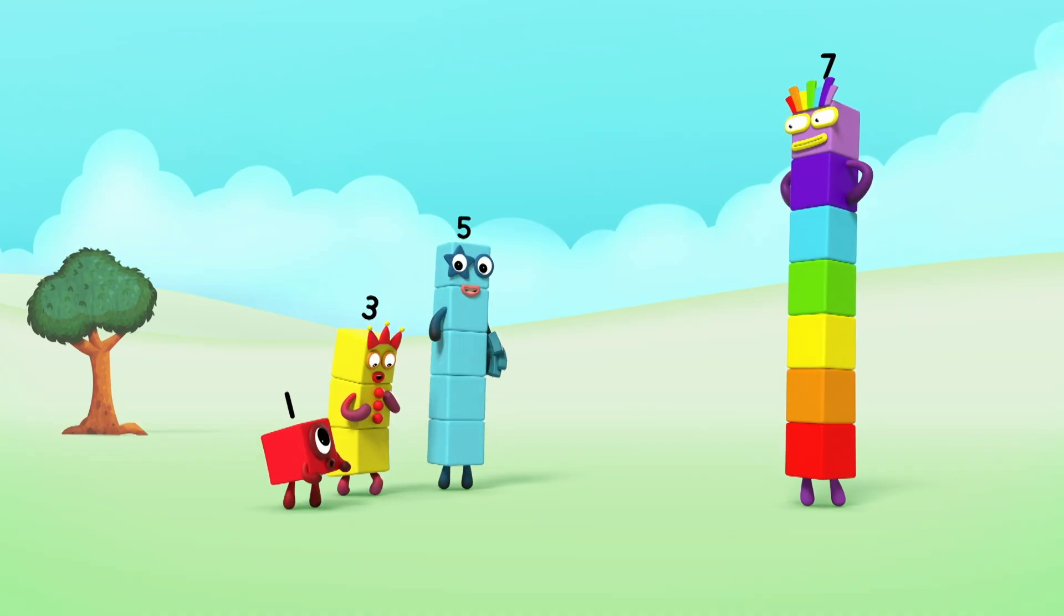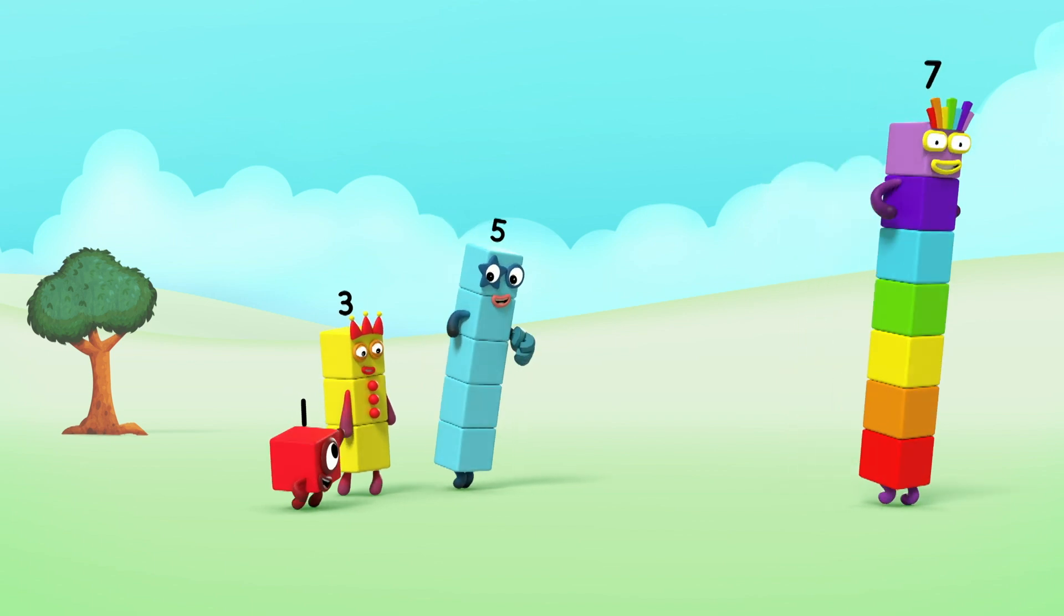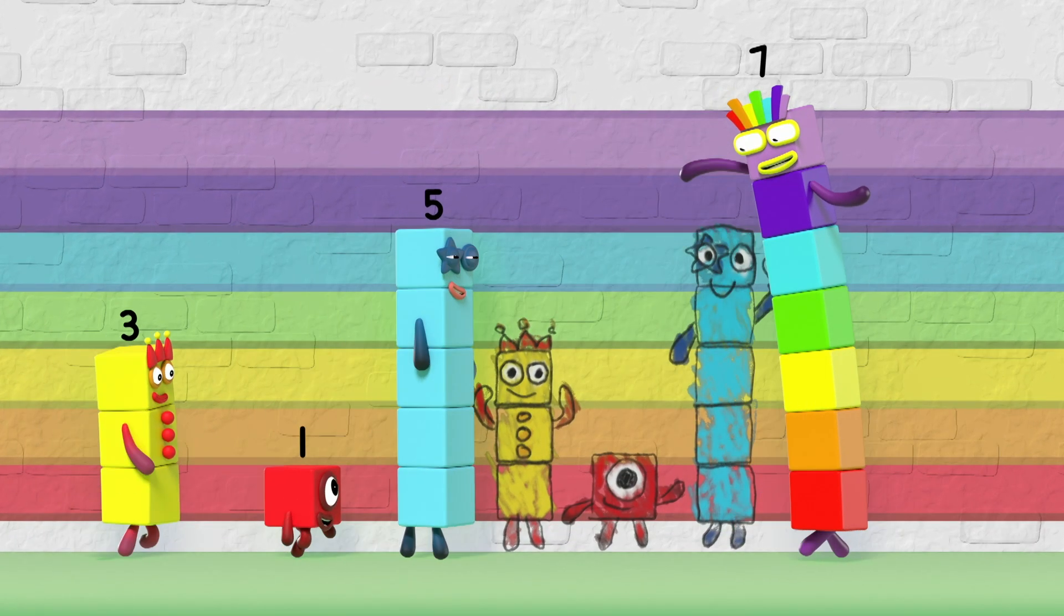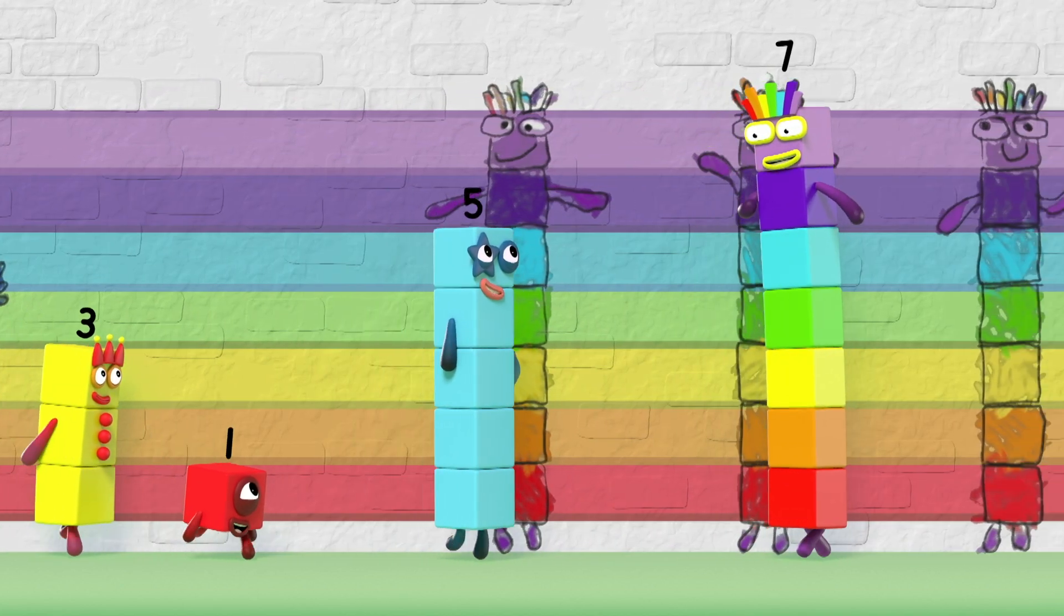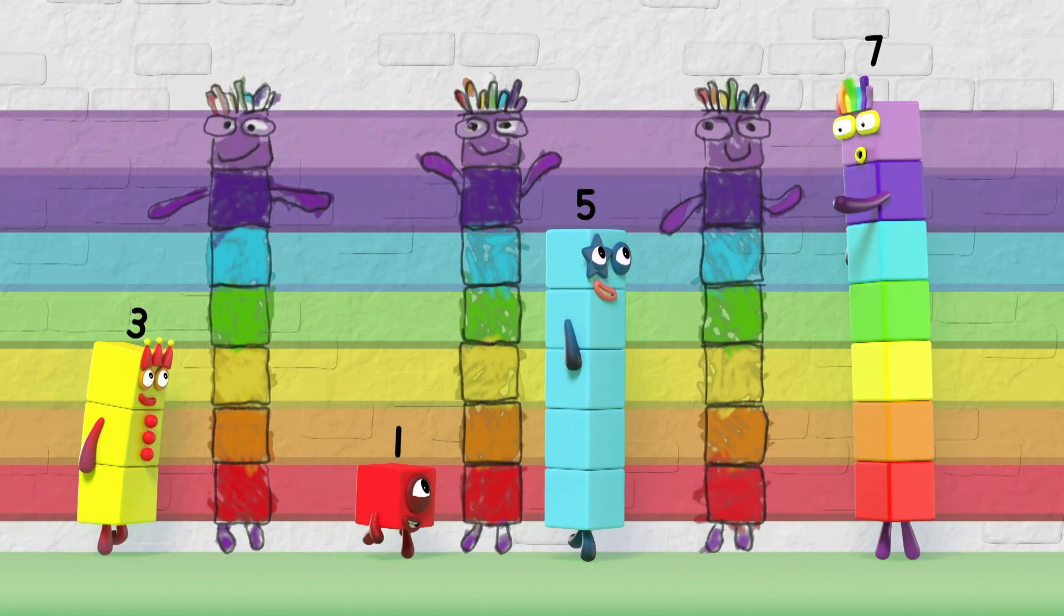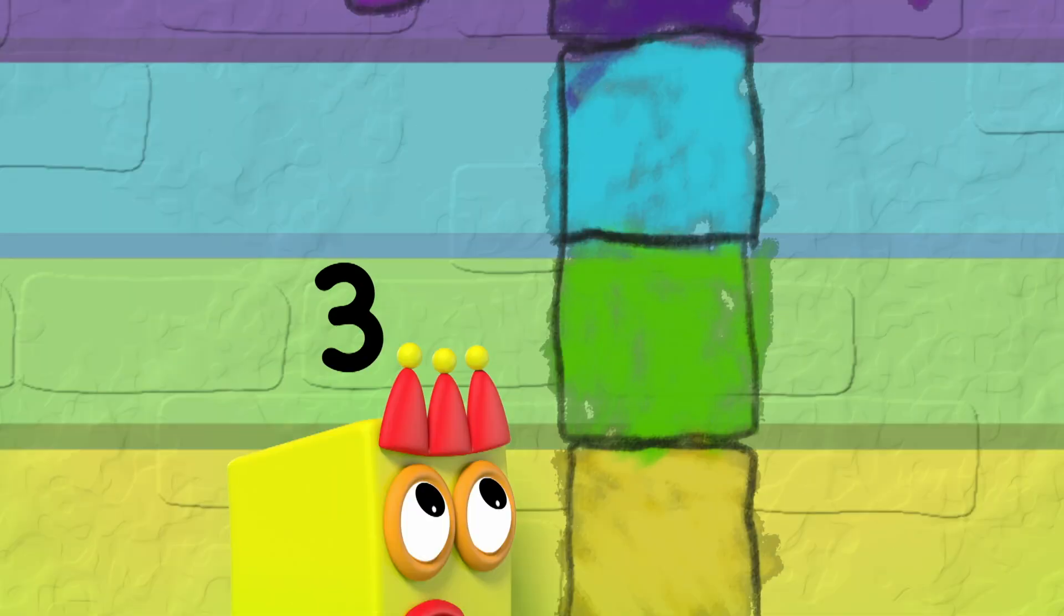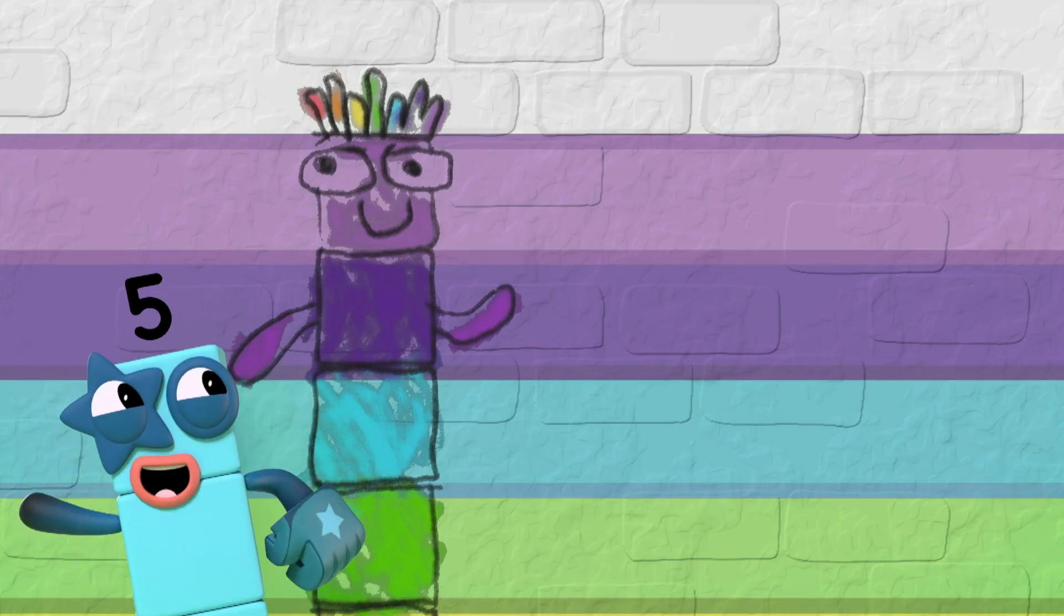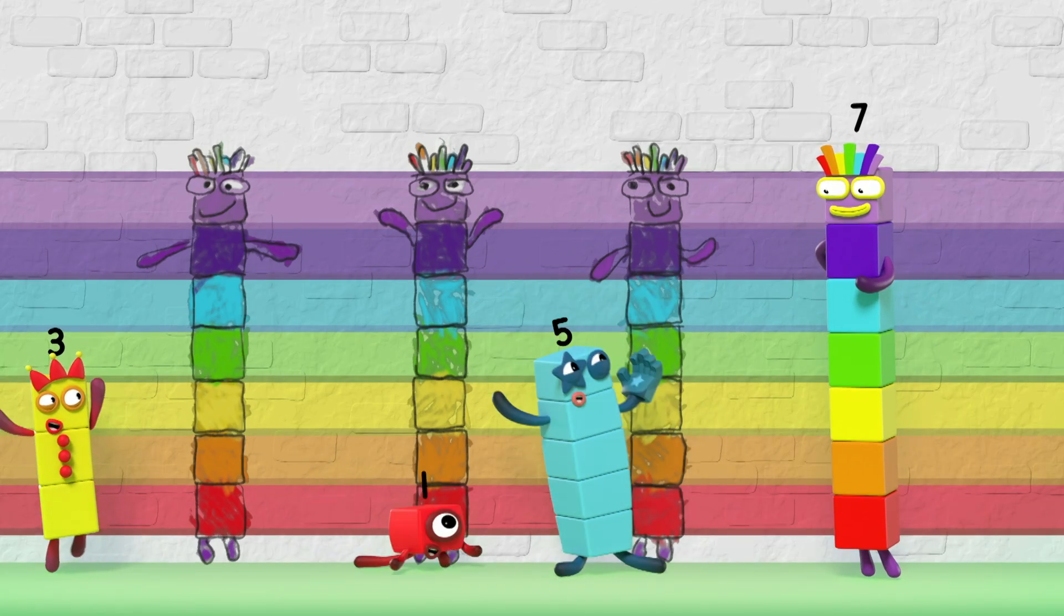But first you have to know the difference between you and me. We all have our place but we're different. That's very easy to see. We're all friends here but we're different. But what makes you you and not me? I'd love to be you but I come up short. I need to add something but what? I'd love to be lucky like seven. What have you got that we haven't got?